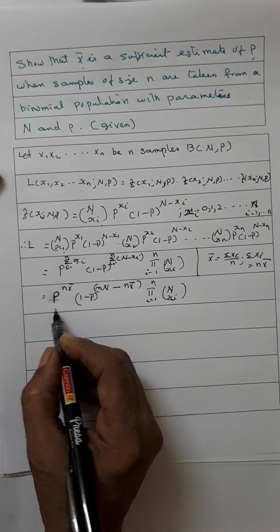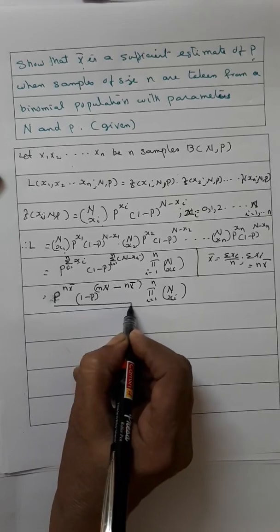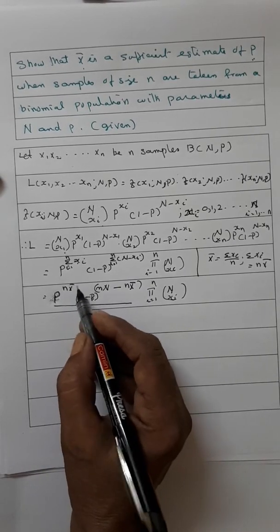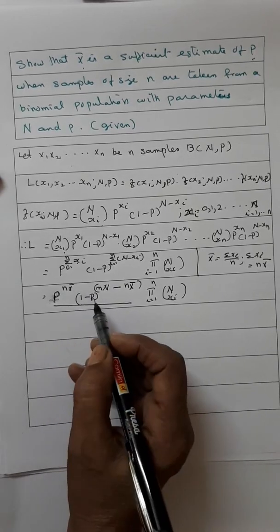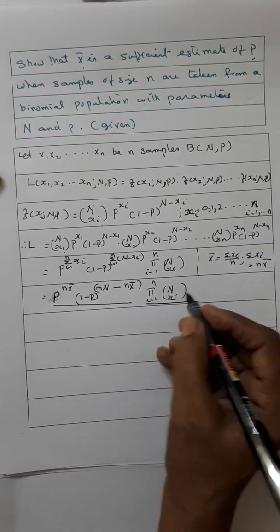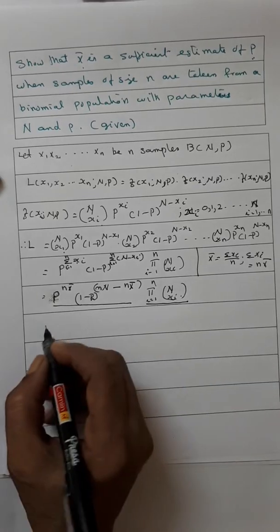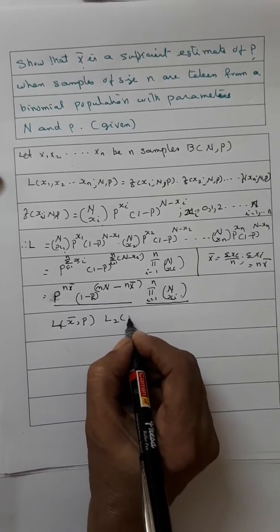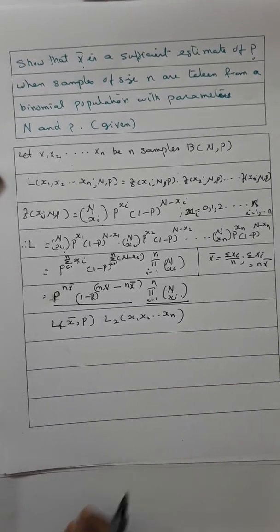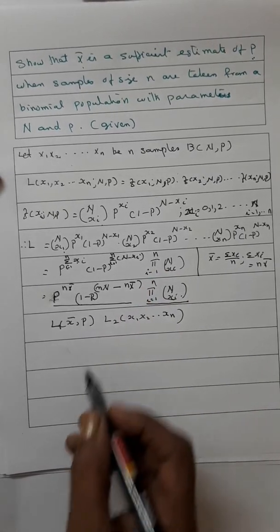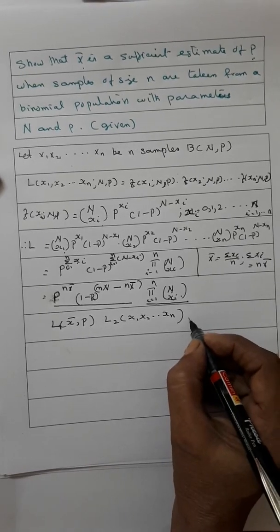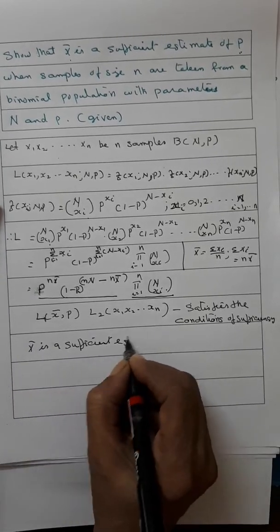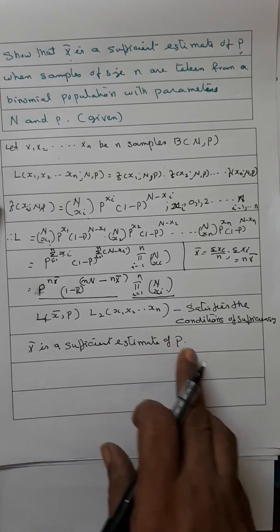So the first two functions together — p^(n·x-bar) · (1-p)^(n² - n·x-bar) — are a function of x-bar and p, i.e., the estimate and parameter. The second function, the product of C(n, xi), is independent of parameter p. Therefore, we can write L = L1(x-bar, p) · L2(x1, x2, ..., xn). This satisfies the conditions of sufficiency, and therefore x-bar is a sufficient estimate of p.